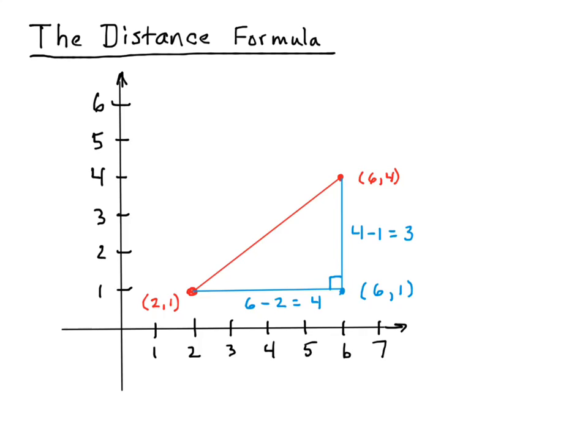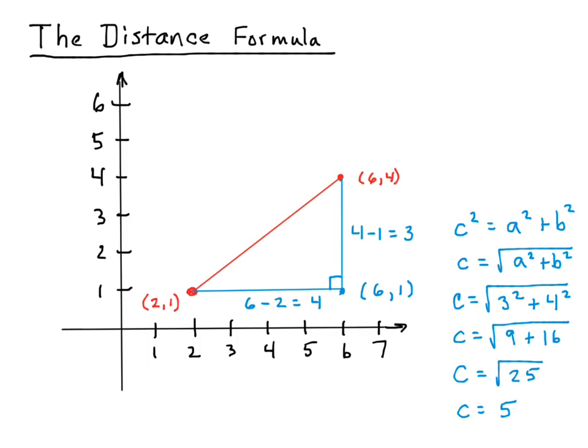What we could do to compute that distance is use the Pythagorean formula, c² = a² + b², where c is the hypotenuse and a and b are the sides. We've found the length of those sides: 4 and 3. We would put them in the formula: 3² + 4², then take the square root. We get √(9 + 16) which is √25. So that distance is 5.